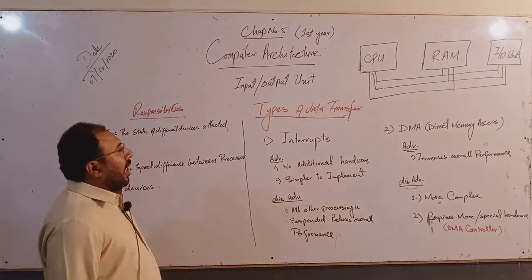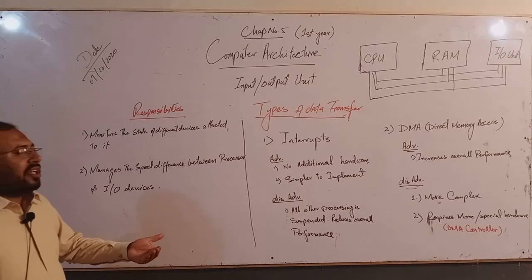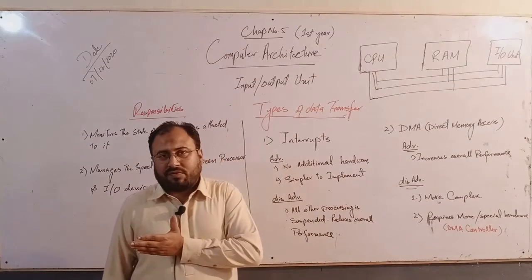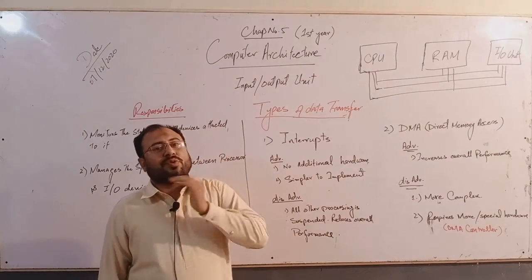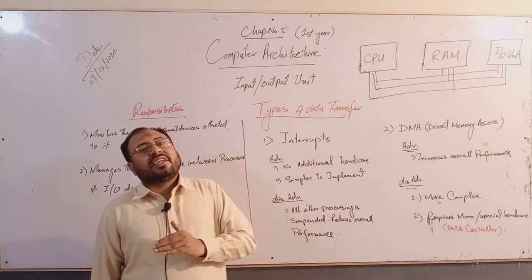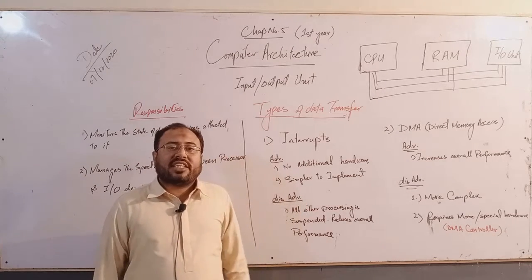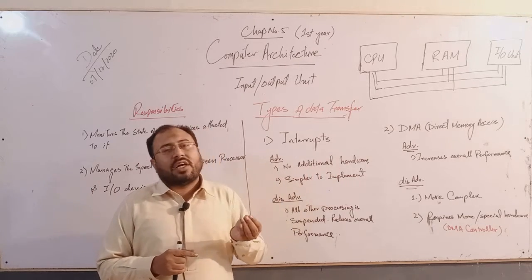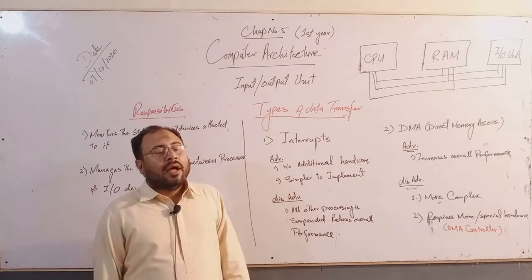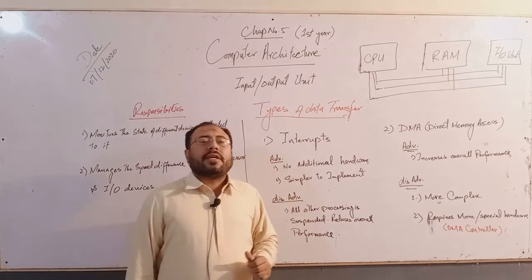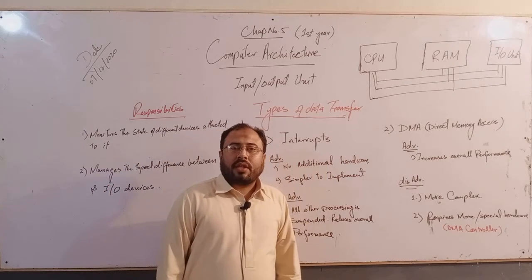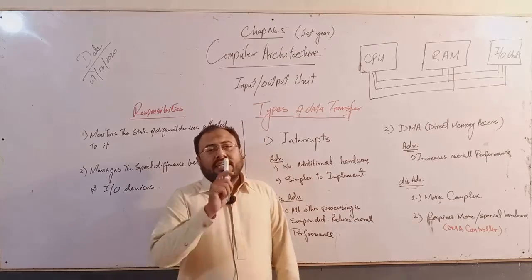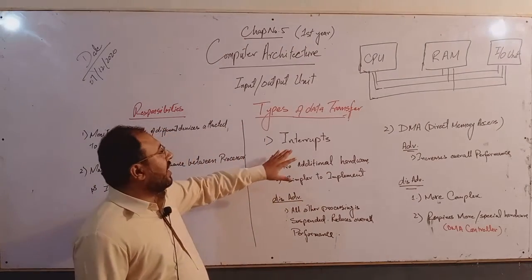Now, data transfer — we are studying how data transfer from a device to the CPU happens. Data goes from input devices to the CPU, and similarly from the CPU to output devices. In between, the input output unit is there — data will come to it and go from it. There are two techniques for this data transfer.